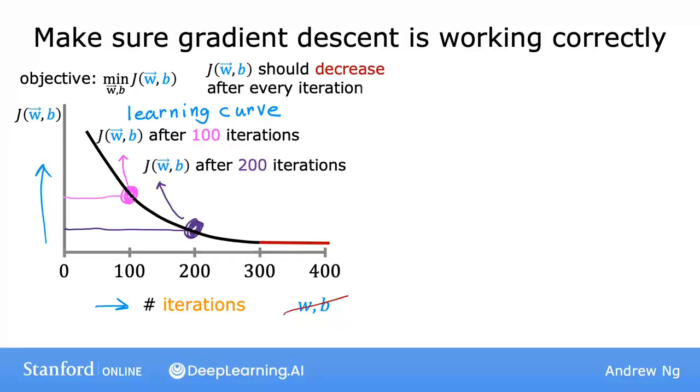Another useful thing that this plot can tell you is that if you look at this curve, by the time you reach maybe 300 iterations or so, the cost j is leveling off and is no longer decreasing much. And by 400 iterations, it looks like the curve has flattened out. So this means that gradient descent has more or less converged, because the curve is no longer decreasing. So looking at this learning curve, you can try to spot whether or not gradient descent is converging.